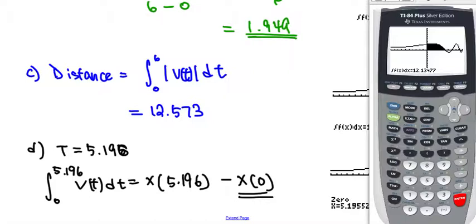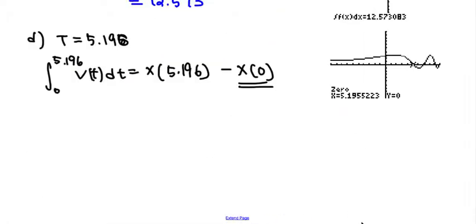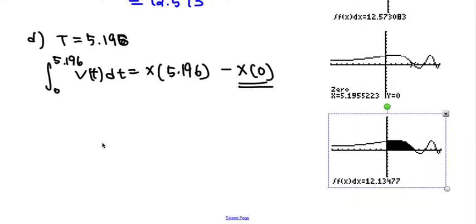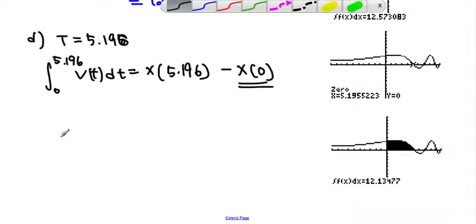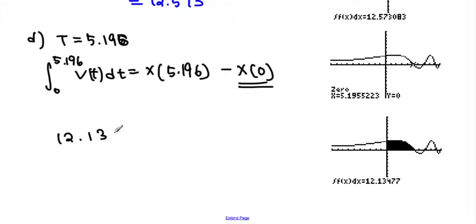Now, what we can do is this. Using that value, we should be able to figure out the last answer here. Bring this one down. So, here it goes. 12.135 would have been equal to x position 5.196 minus 2, because 2 was the original position as you can see earlier. So, therefore, our final answer would have been 14.135. Alright.